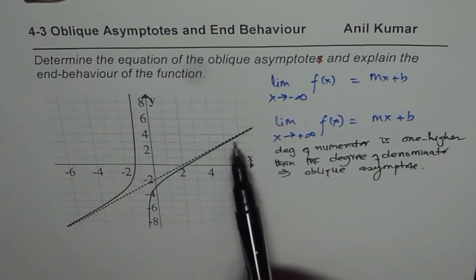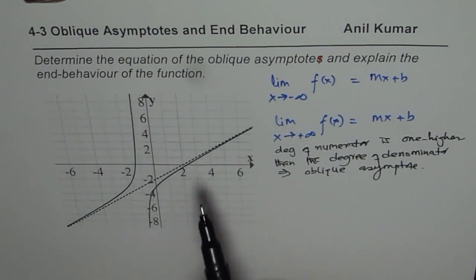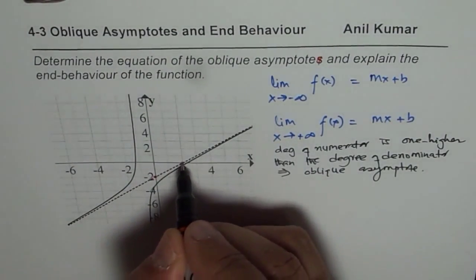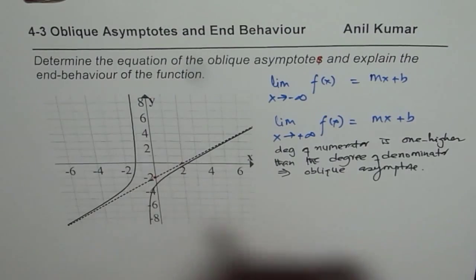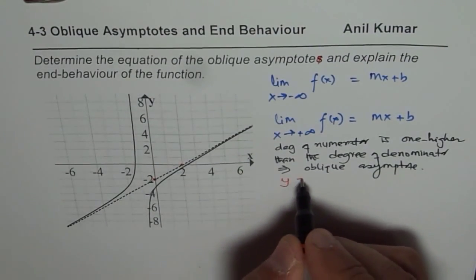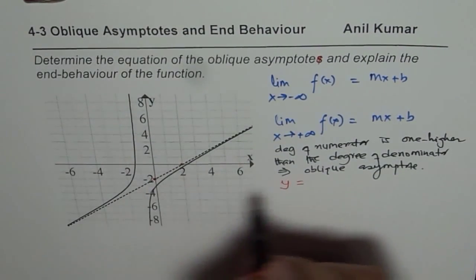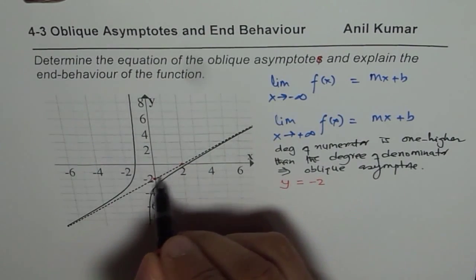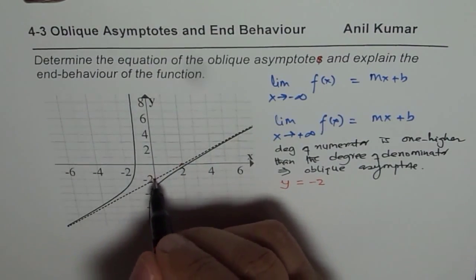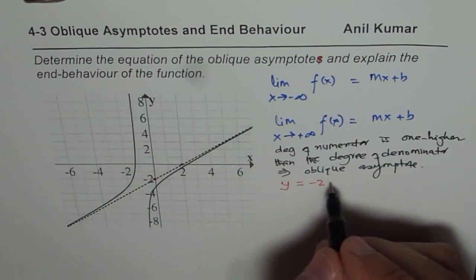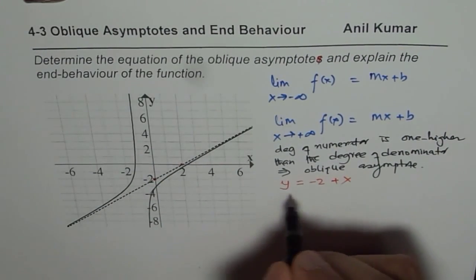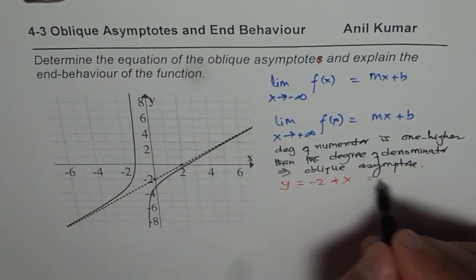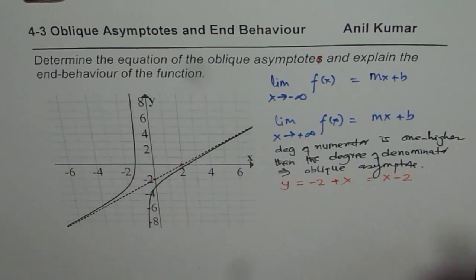From this graph, we can actually find the equation of the oblique asymptote. We know the y-intercept is minus 2 and the x-intercept is 2. The equation of the line could be written as y equals x minus 2, where minus 2 is the b value and the slope is positive — a rise of 2 and a run of 2.